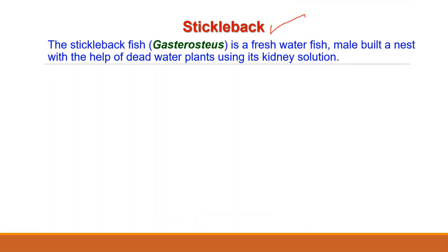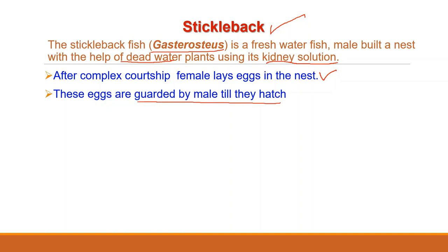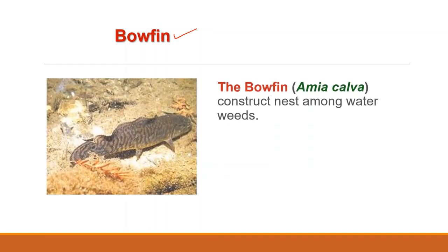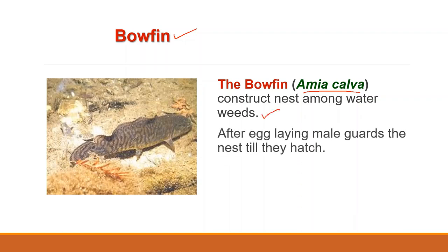As far as vertebrates are concerned, the stickleback fish, Gasterosteus, is a freshwater fish. The male builds a nest with the help of dead water plants using its kidney secretion, and complex courtship behavior induces several females. There is another example of bowfin, the zoological name of which is Amia calva. It constructs nests among water weeds. After the eggs are laid by the female in the constructed nest, the male of these species guards the nest till they hatch.